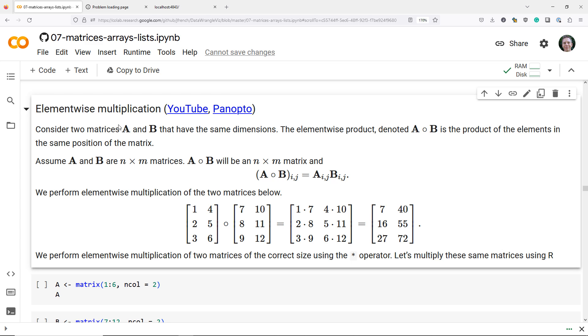So we're going to assume that we have two matrices, A and B, they have the same dimensions, and the element-wise product, which we denote by A and then this circle thing B, is just the products of the elements in the same position of the matrices.